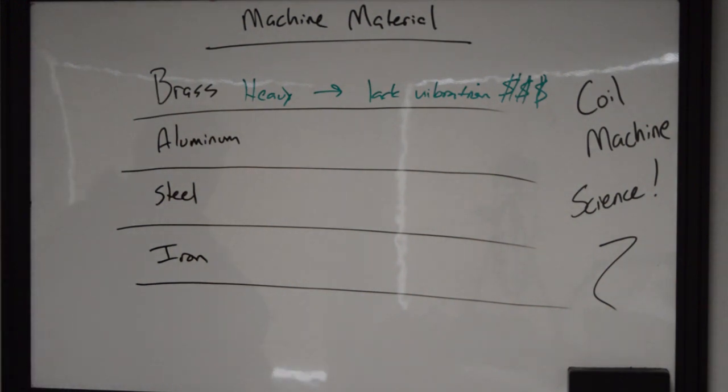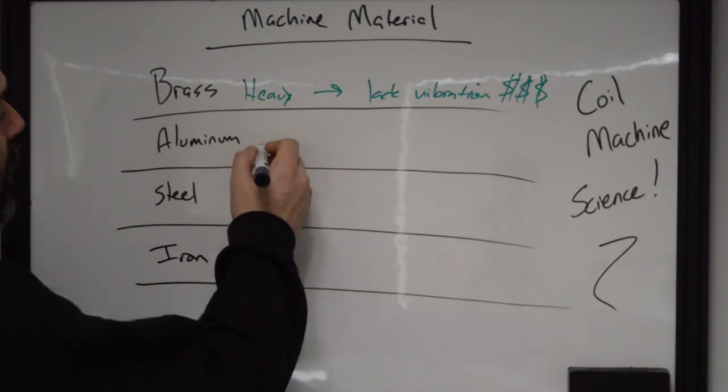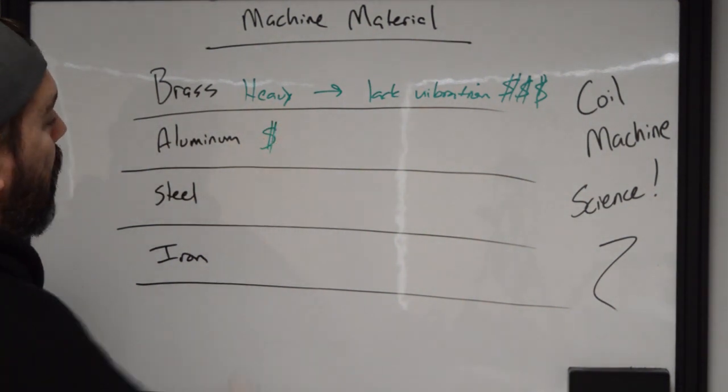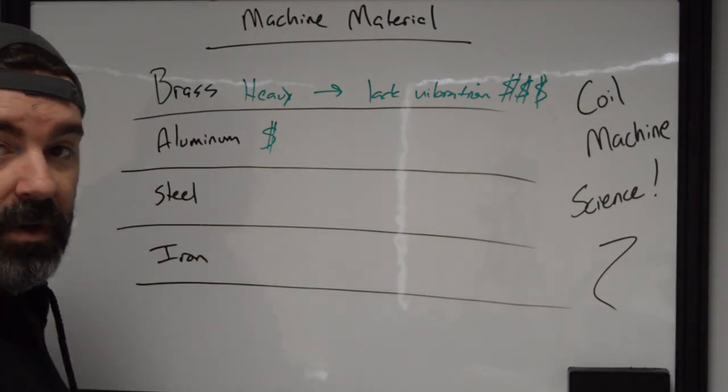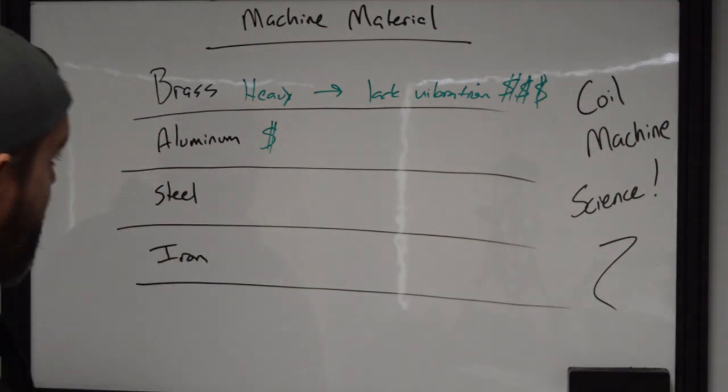Next one, aluminum. Aluminum is cheap. It's so easy to go out and get an aluminum frame made. I mean, you can go to any machine shop, give them a chunk of aluminum and just CNC this and it's just quick as all hell.